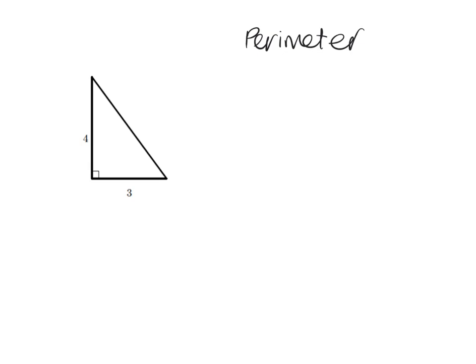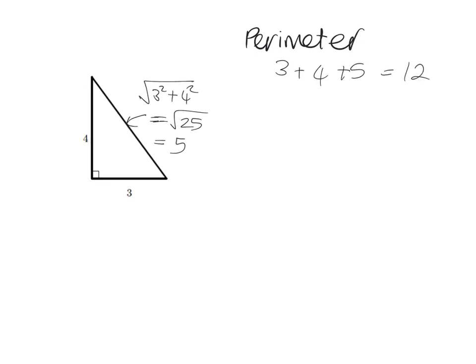So if we wanted the perimeter of this triangle, we obviously need this side plus this side plus this side. We don't know one side, but we can work it out using Pythagoras because we're in a 90-degree triangle. By Pythagoras, the missing side is the square root of 3 squared plus 4 squared — that's 9 plus 16 — square root of 25, which equals 5. So the perimeter is 3 plus 4 plus 5, which gives us 12.